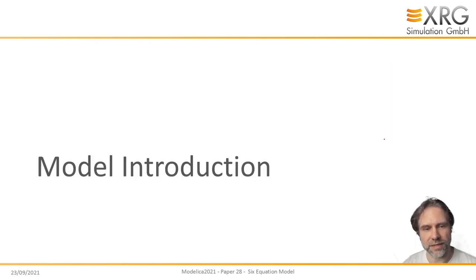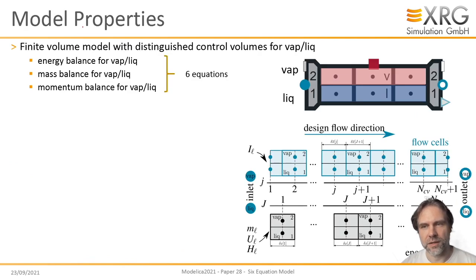Let me introduce the model and its principles. The model is based on a finite volume discretization with distinguished control volumes for the vapor and the liquid phase. It comes with an energy balance, mass balance, and momentum balance for both phases, and that's altogether six equations, which is how the name six-equation model comes about.